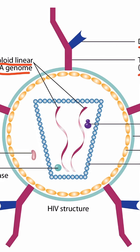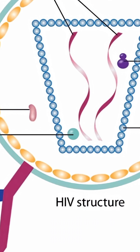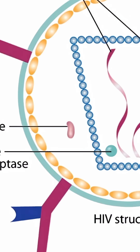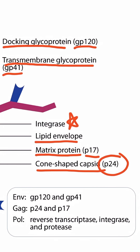Notice that there are several key enzymes that the virus makes, including reverse transcriptase, integrase, and protease. If you look at the box to the right, you can see that each of these proteins or enzymes are encoded for by three genes. The Env gene encodes for GP120 and GP41. The Gag gene encodes for P24 and P17. And the Pol gene encodes for reverse transcriptase, integrase, and protease.